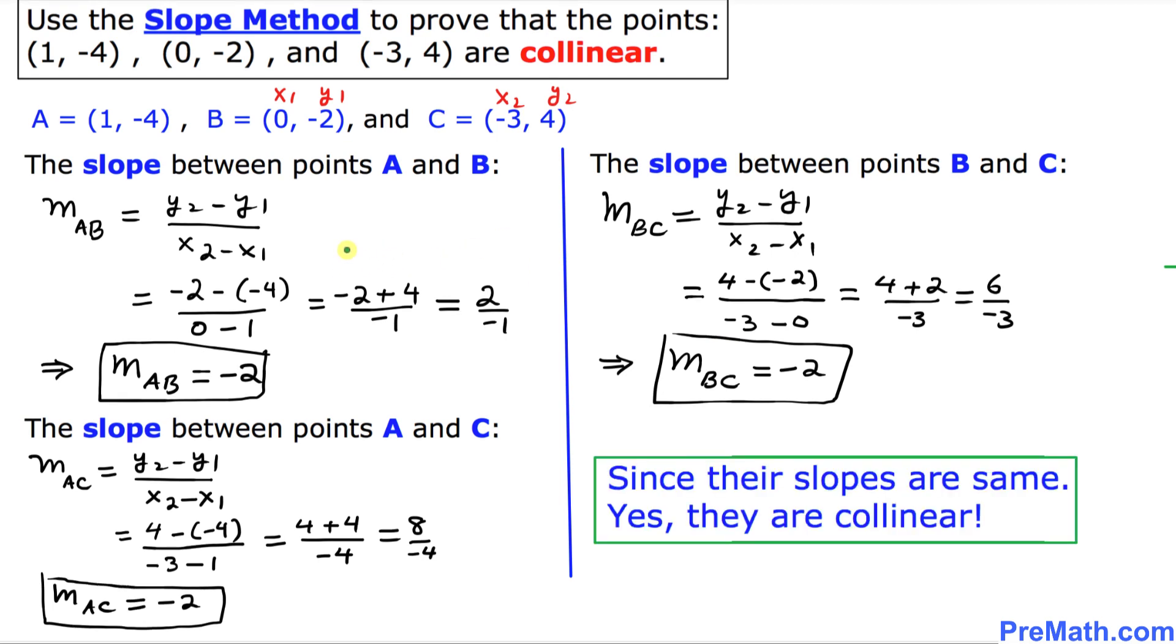And as we can observe that in all three scenarios, our slopes are the same. If these slopes are the same, then we're going to say that they are indeed collinear. And one more thing, let me make a point really necessary.